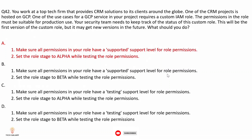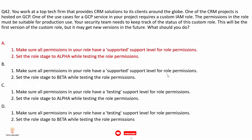Option A: make sure all permissions in your role have a supported support level, and set the role stage to alpha while testing. Custom roles include a launch stage stored in the stage property. Alpha means the role is still being developed or tested, or includes permissions for Google Cloud services not yet public. Since this is the first version and may get new versions in the future, option A is correct.